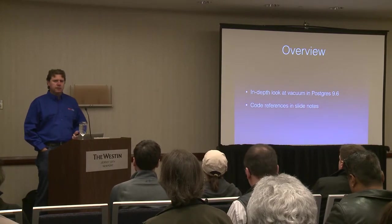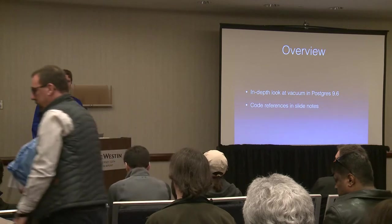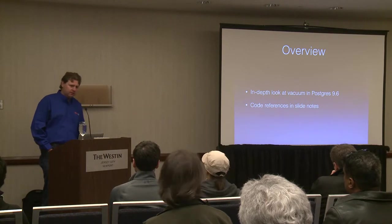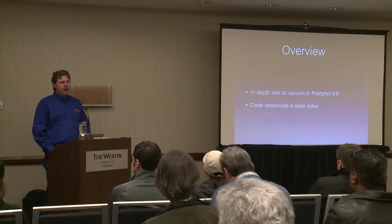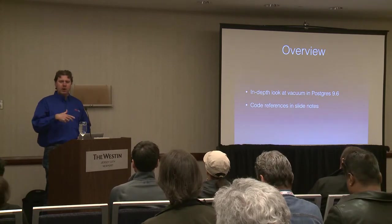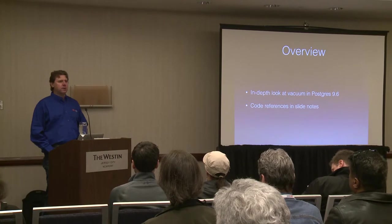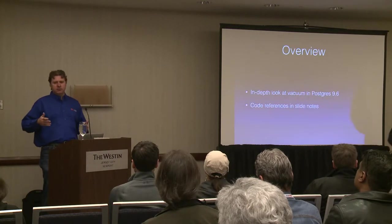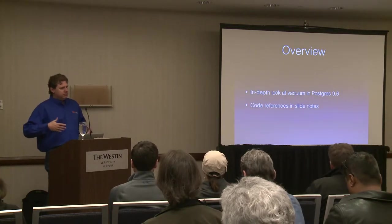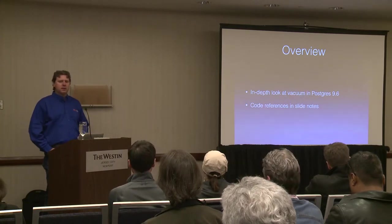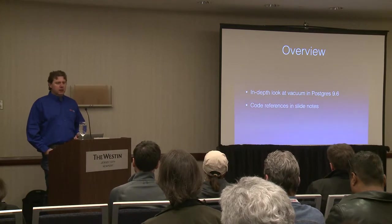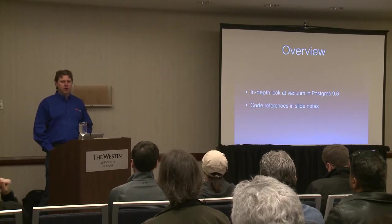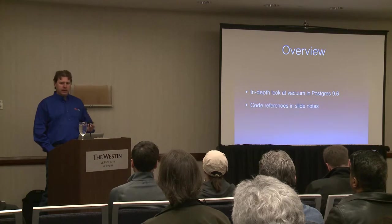There are a lot of different talks and blog posts out there about vacuum — how to tune vacuum, what about cost delay, all that kind of stuff. What I really wanted to do with this talk was walk through what vacuum actually does. We all know it gets rid of dead tuples and puts space back in the database, but beyond that we don't know what the internals are actually doing. So that's what I want to go through — what does the code of vacuum look like and what is it doing?